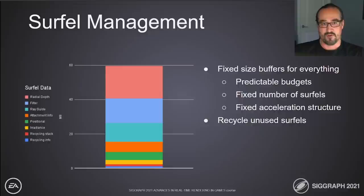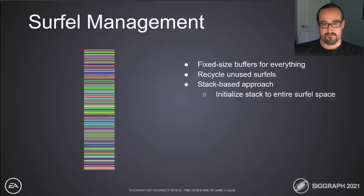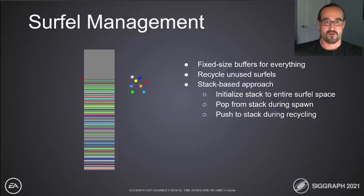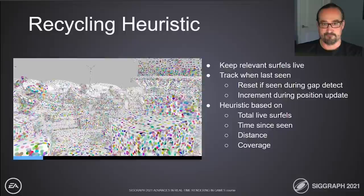Since we're dynamically spawning surfels as we move through the level, the question may be asked how we keep memory and performance consistent. The surfel algorithm allocates all resources required for surfel management up front, meaning there are limits to the number of surfels available. To effectively make use of available resources, we employ a surfel recycling algorithm. A stack of available surfels is maintained at all times, initialized on level load to contain indirections to the entire surfel space. As we move through the level and surfels spawn, the stack counter is decremented by an atomic GPU operation, and the IDs of surfels on the stack are retrieved as they spawn. When a surfel is recycled, the stack counter is incremented and the surfel writes its ID back to the pre-allocated stack buffer — all done on the GPU.